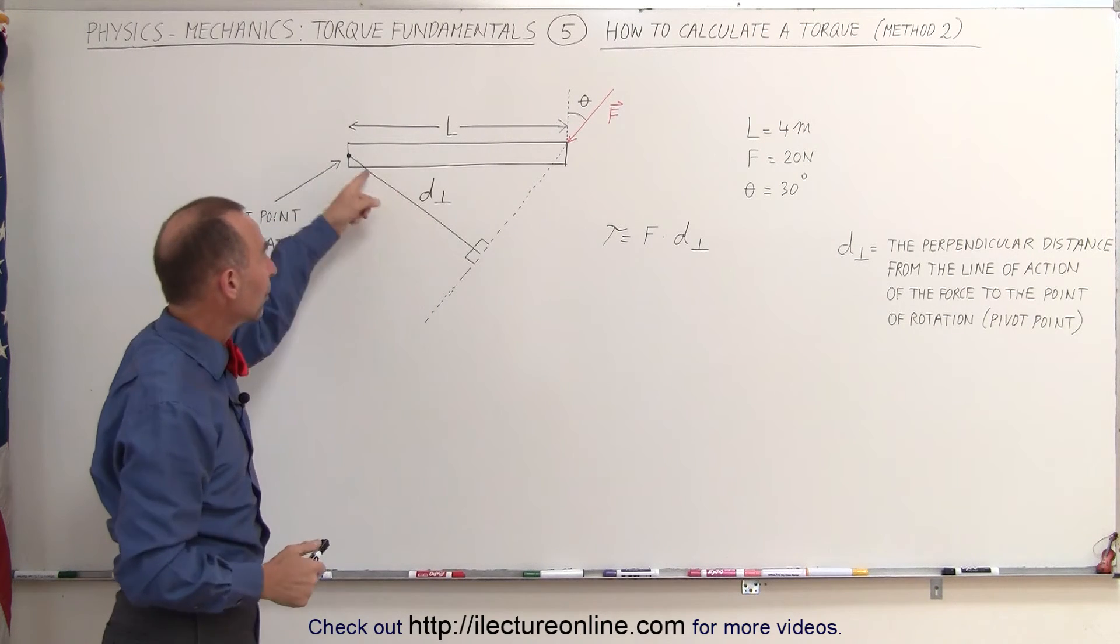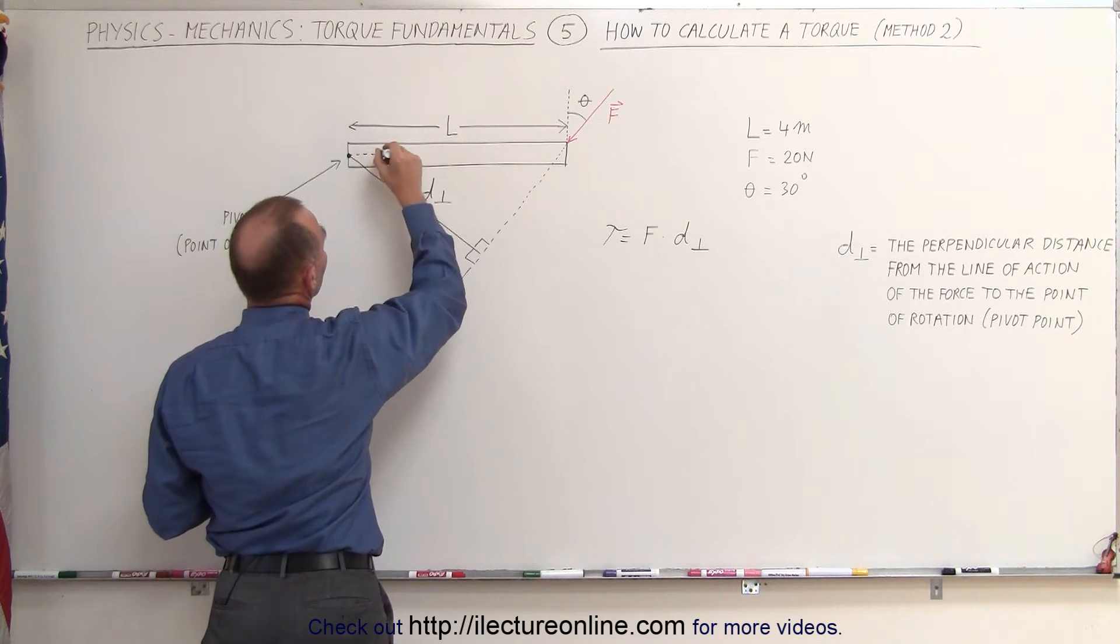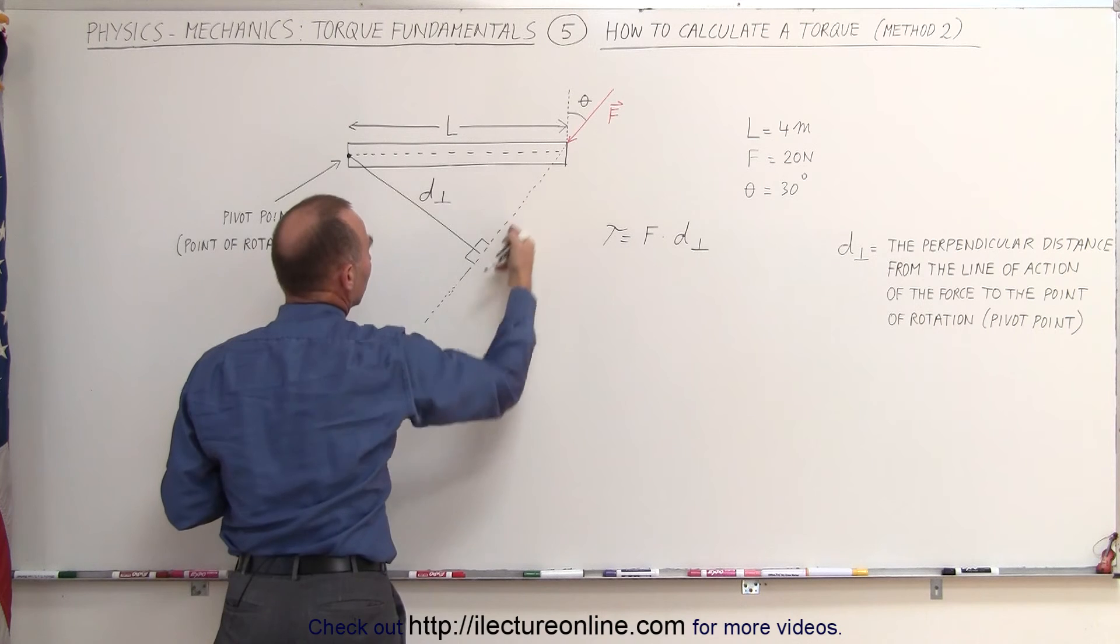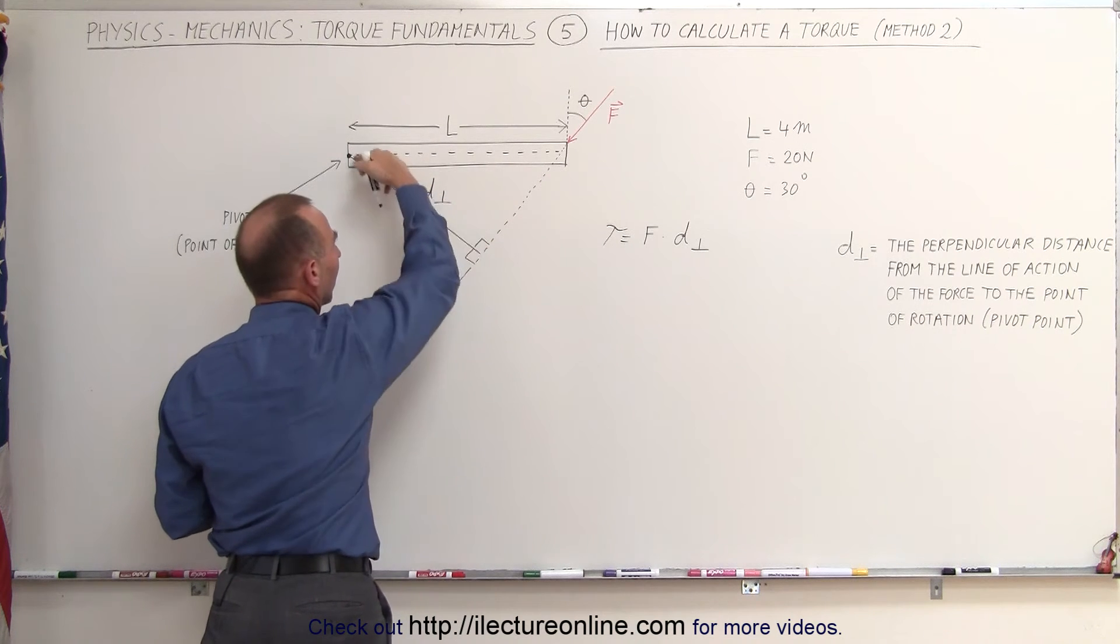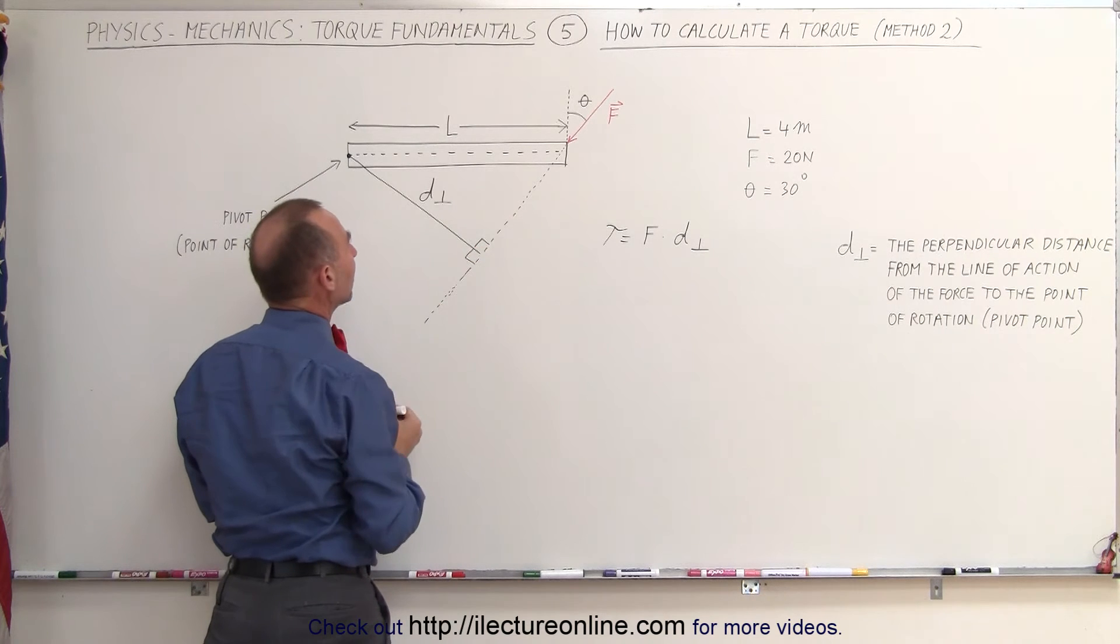Now, how do you find that perpendicular distance? Well, notice that you have a right triangle. If you draw a line right here, this way, we draw this line here, and then we have what we call the perpendicular, this forms a right triangle. Here's a 90 degree angle.